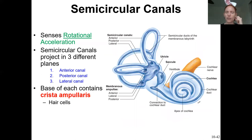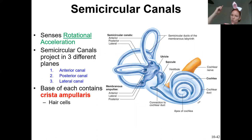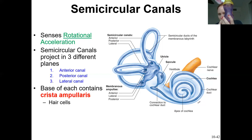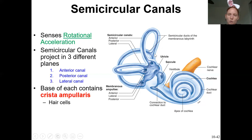The semicircular canals — those half circles — are oriented in three different planes: the anterior canal, the posterior canal, and the lateral canal at a diagonal. They are filled with endolymph on the inside. They monitor rotational acceleration — any kind of spinning, tumbling, turning of your head. This creates flow in the endolymph, and you can detect changes in movement because the fluid continues to flow even after you've stopped.